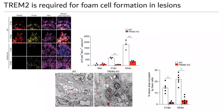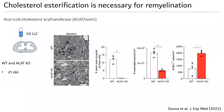This suggests that formation of foam cells and lipid droplets may be protective. To test this, we used mice deficient in ACAT1 (acyl-CoA cholesterol acyltransferase 1), the central enzyme for forming lipid droplets by transferring an ester group to cholesterol for storage as cholesterol esters. In these ACAT1 knockout mice, as expected, no lipid droplets form in microglia. Additionally, mirroring the TREM2 knockout, remyelination is severely impaired and there is retention of phagocytes within lesions.